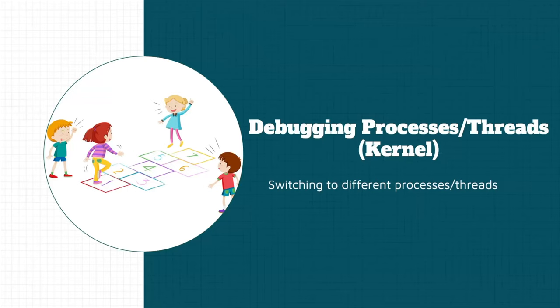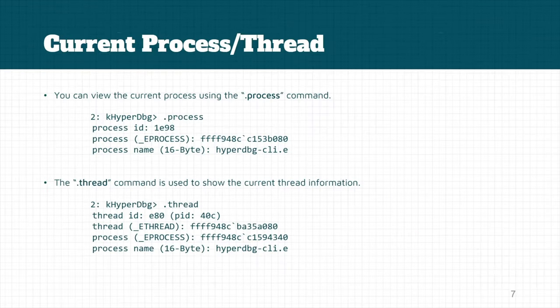Let's see how we can debug processes and threads, which is a really important concept in kernel mode and user mode. By using the .process command you know the current process that is currently executing in your system, or it shows the current process whose CR3 register is currently mapped.